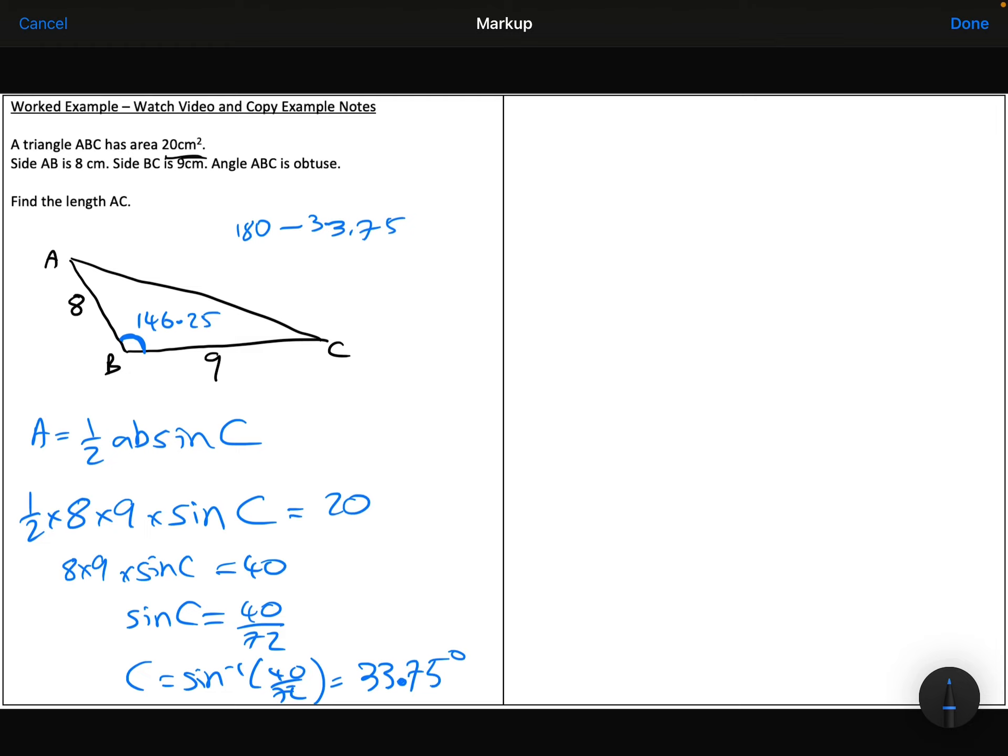Right. I can now use the cosine rule to work out the length AC. So the cosine rule is A squared equals B squared plus C squared minus 2 times B times C times the cosine of the angle between them.